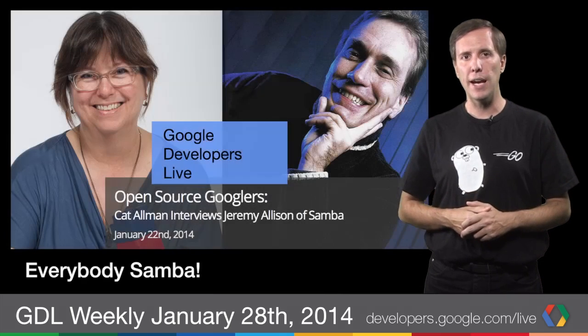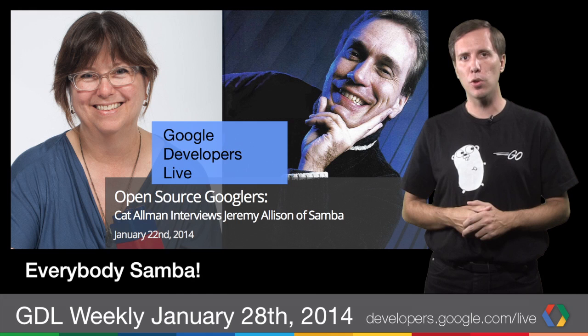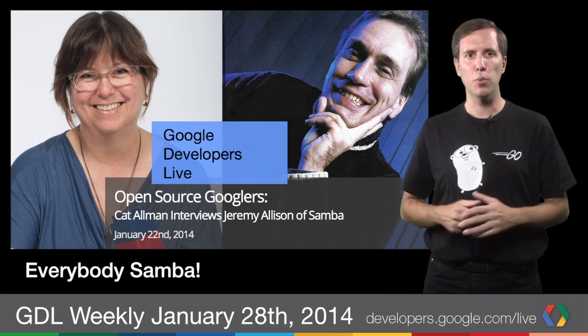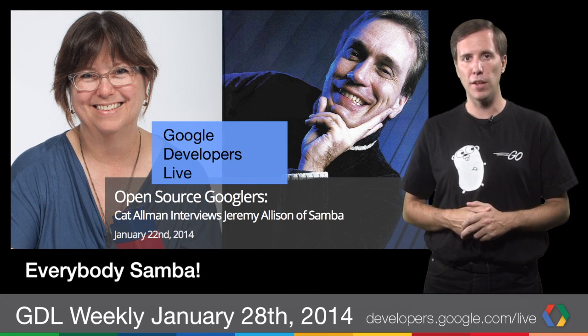We then invited open source maven Cat Allman to the studio, who interviewed Googler Jeremy Allison to talk on the Samba project, the standard Windows interoperability suite of programs for Linux and Unix.